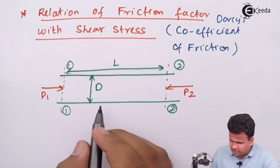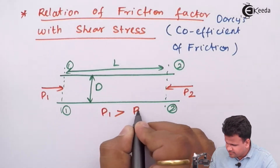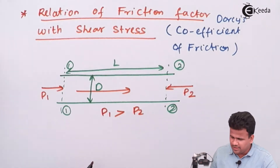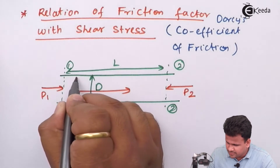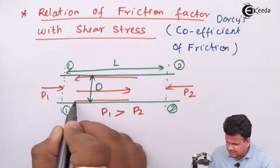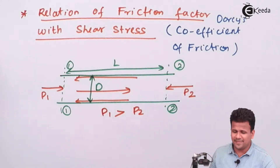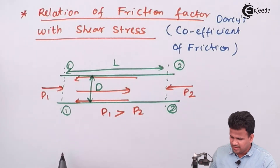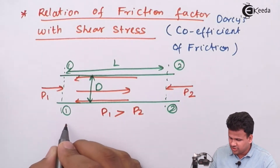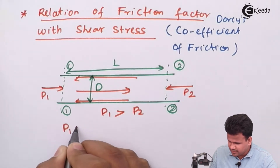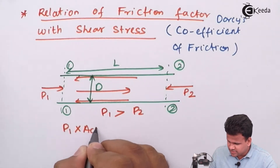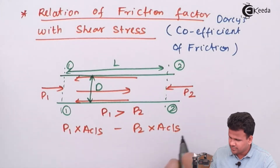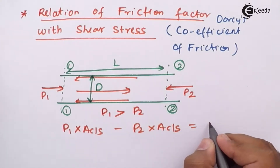Due to pressure P1 being greater than P2, the fluid flows from section 1-1 to section 2-2, but the frictional force acts in the opposite direction at the walls of the pipe. We consider this pipe as a cylinder, so friction acts along the walls of that entire cylinder.